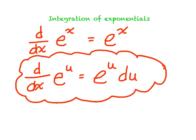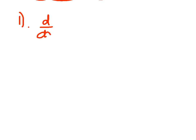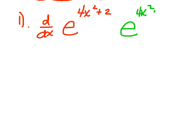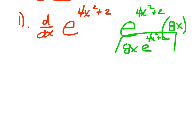Before I go on with integrals, I'm going to do just a couple examples of derivatives. Let's say I wanted to take the derivative of e to the 4x squared plus 2. It's e to the u, so I leave it alone and multiply by the derivative of the exponent, which is 8x. When you clean it up and pull that constant out front, you get 8x e to the 4x squared plus 2.